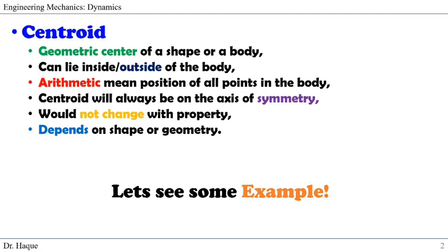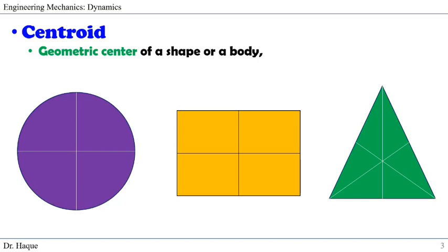Let's see some examples of what we mean by all these definitions. First, we say that a centroid is the geometric center of a shape or a body. For example, if you consider a general shape — circle, rectangle, or triangle — the centroid will lie at the geometric center. So if you take the radius, the center of a circle would be the centroid. For a rectangle, if you connect the middle line or diagonals, it will be your centroid.